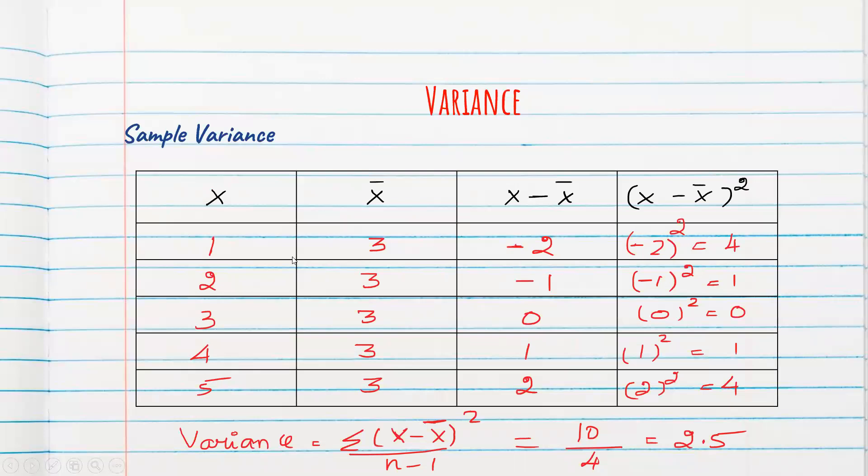1 minus 3 is minus 2. 2 minus 3 is minus 1. 3 minus 3 is 0. 4 minus 3 is 1. 5 minus 3 is 2. So let us square it now. So minus 2 the whole square is 4. This becomes 1, 0, 1 and 4. So when you add 4 plus 1, 5. 5 plus 1, 6. 6 plus 4 is 10. So 10 divided by number of observations minus 1, which is basically 4, which is equal to 2.5.